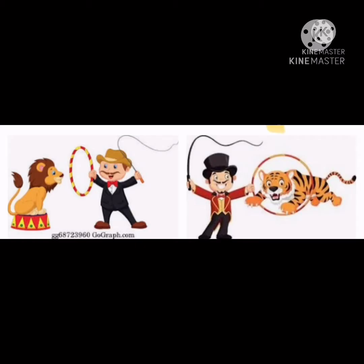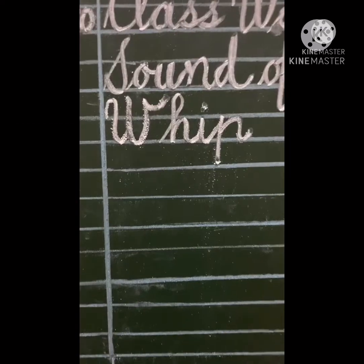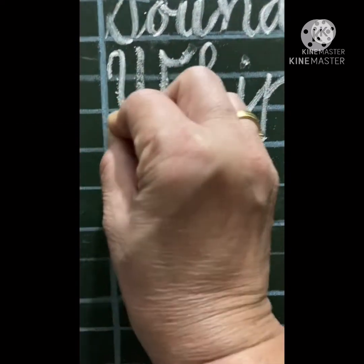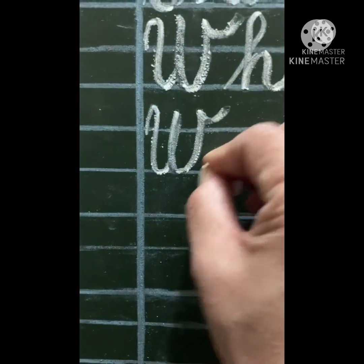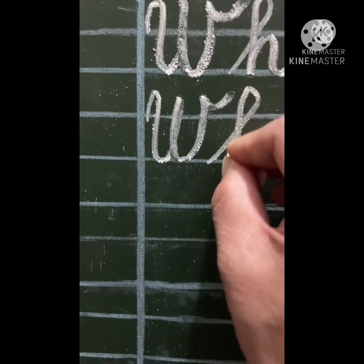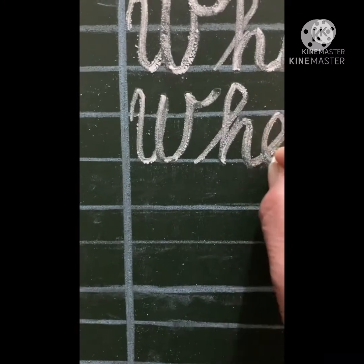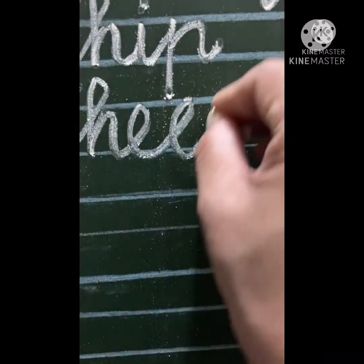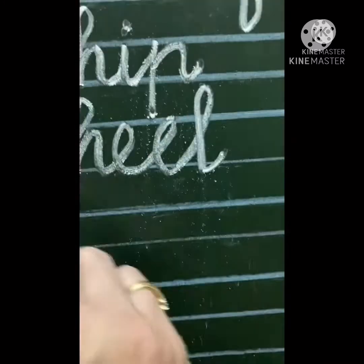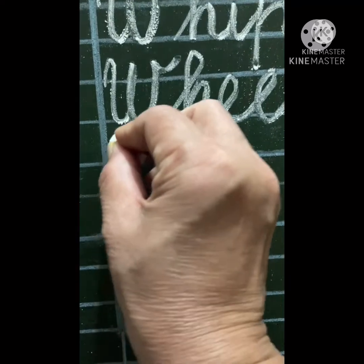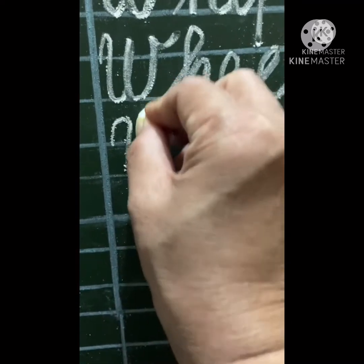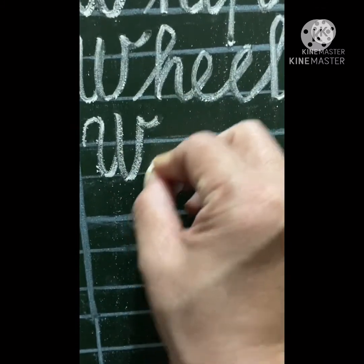The next word starting with the 'wh' sound: W-H-E-E-L — wheel. It's round in shape and helps vehicles to move.